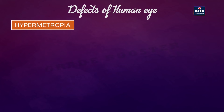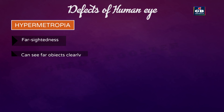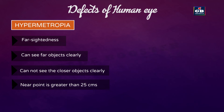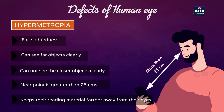Hypermetropia, also called farsightedness: persons with this defect can see far objects clearly but cannot see nearby objects clearly. The normal near point of the human eye is 25 cm, but for a hypermetropic person the near point is farther than 25 cm. So they keep reading material much beyond 25 cm from the eye for comfortable reading.